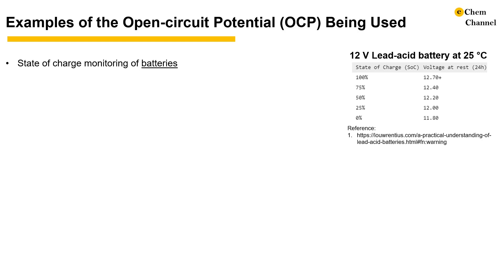In lead-acid batteries, people have used open-circuit potential measured at 25 degrees Celsius after 24 hours of resting to estimate the state of charge. An example is shown in the table on the right. This relationship can be tricky as it depends on the manufacturer and the aging condition.